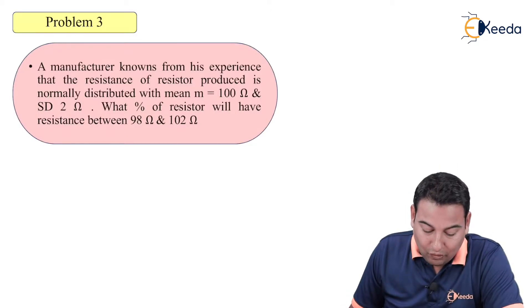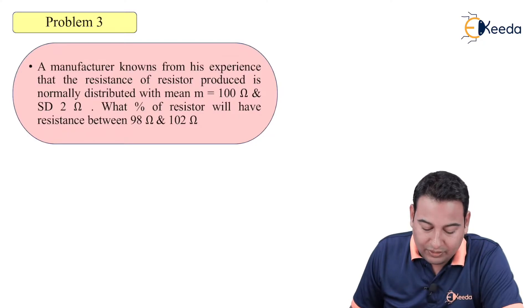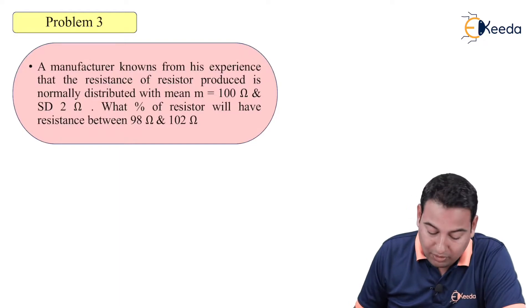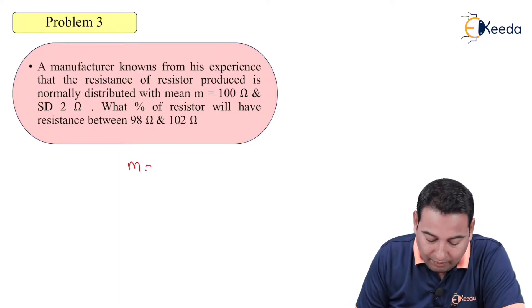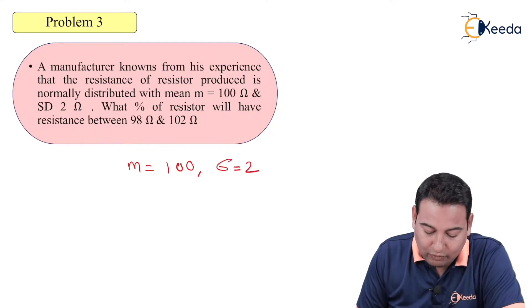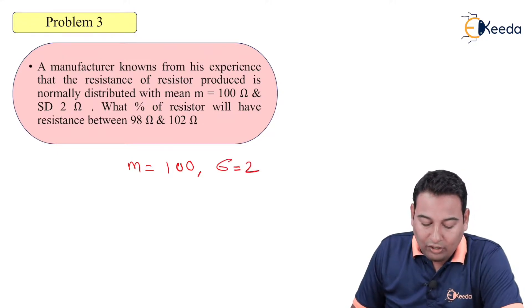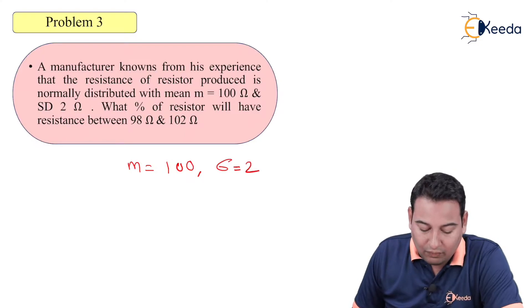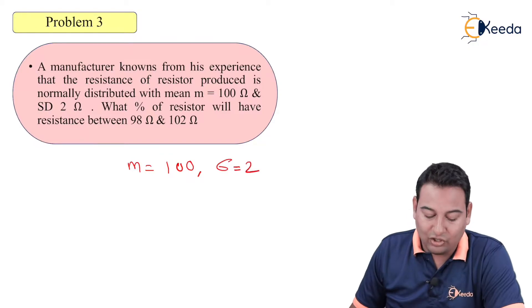A manufacturer knows from his experience that the resistance of resistors produced is normally distributed with mean m equal to 100 ohms and standard deviation sigma equal to 2 ohms. What percentage of resistors will have resistance between 98 ohms and 102 ohms?